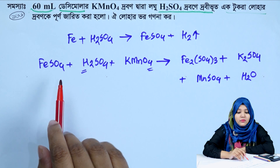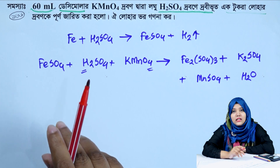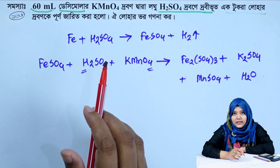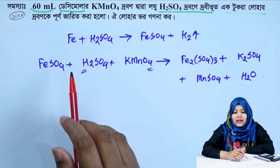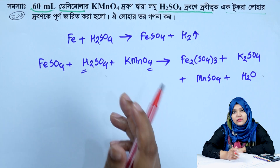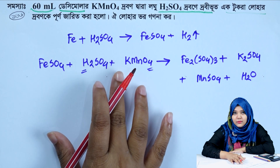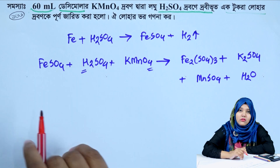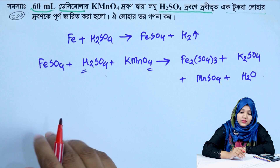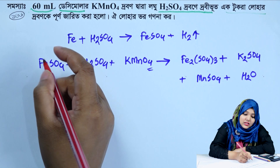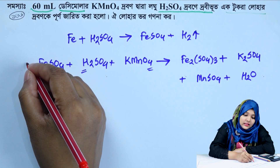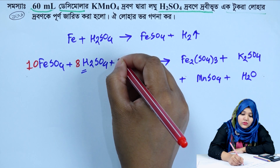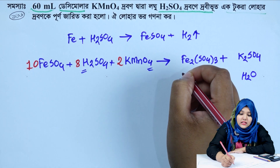Looking at the balanced equation: 2 moles of potassium permanganate react with 10 moles of ferrosulfate. So 2 moles of potassium permanganate react with 10 moles of ferrous sulfate — meaning 1 mole of KMnO₄ reacts with 5 moles of ferrous sulfate (Fe²⁺).